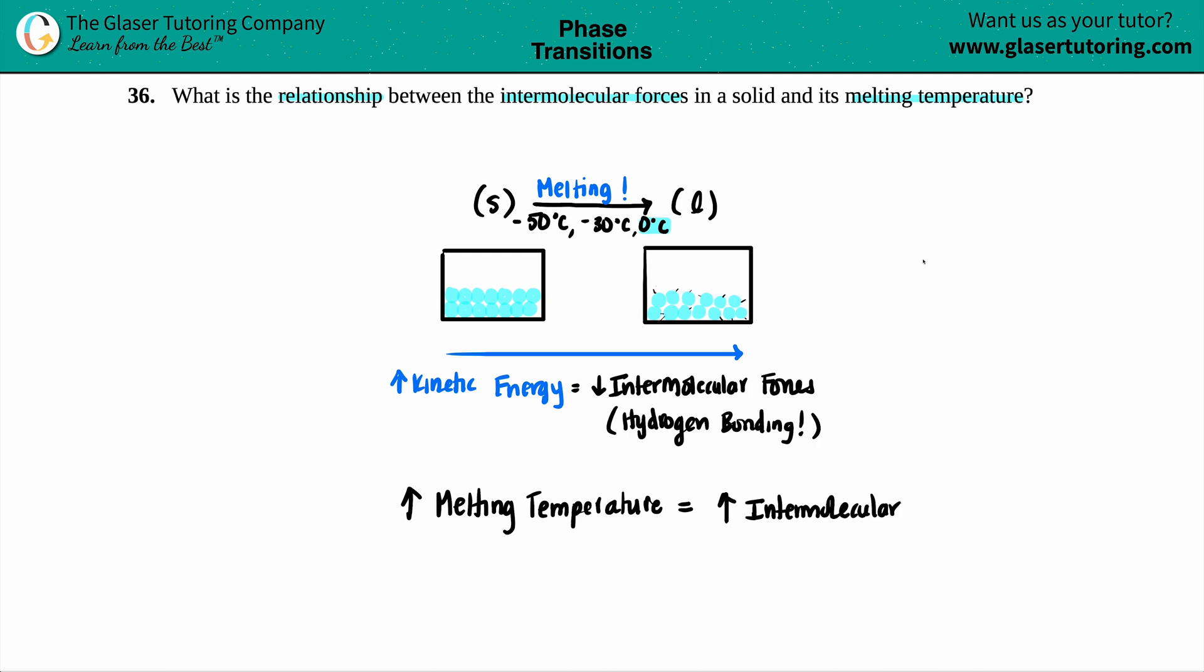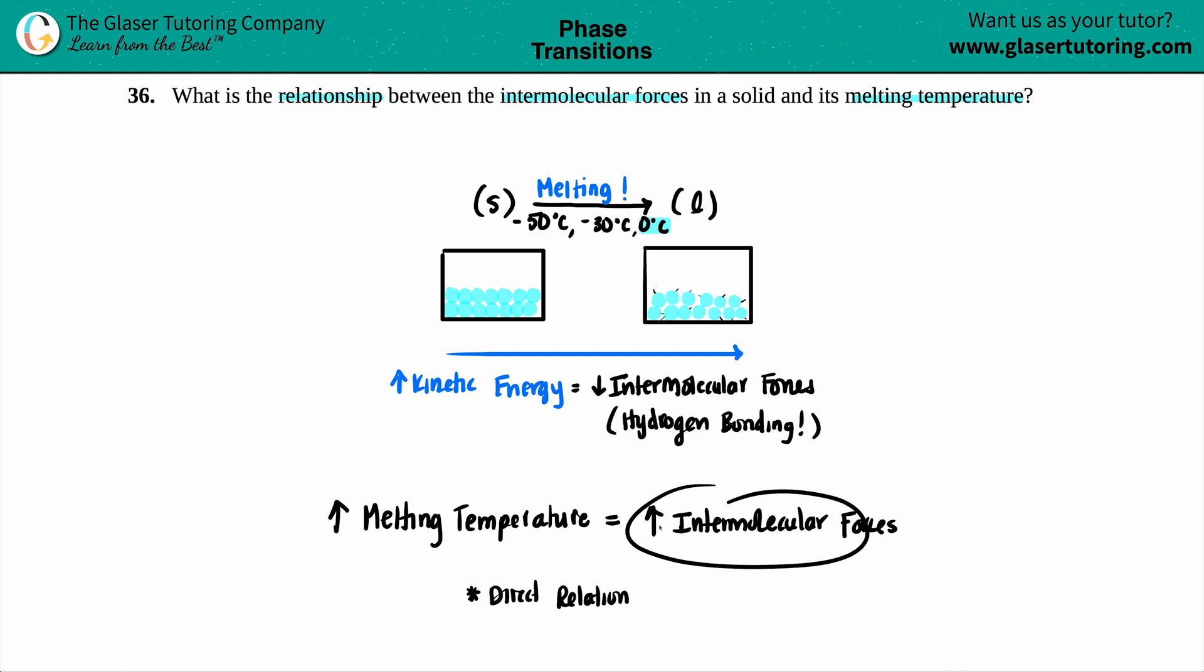And the same thing happens for vaporization temperature, the boiling temperature that if you have probably a high melting temperature, you're going to have a high boiling temperature because you just need so much more heat to overcome the intermolecular forces. So this, since they're both going up and up, this would be a direct relationship. So you could have said it anyway, just had to be the same thing going on. So as your intermolecular forces increases in the substance, your melting temperature will increase. And there you go.